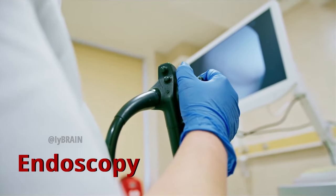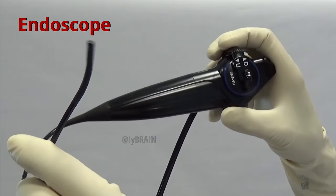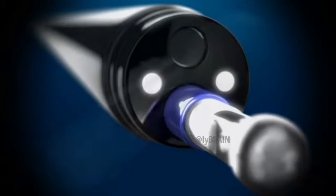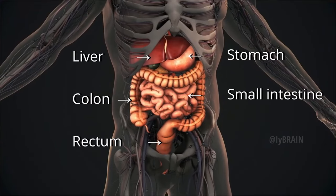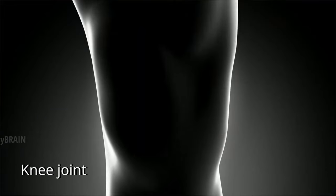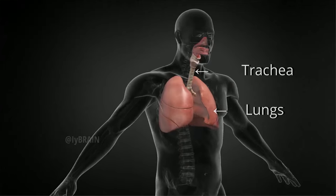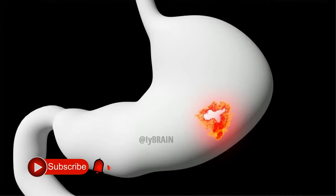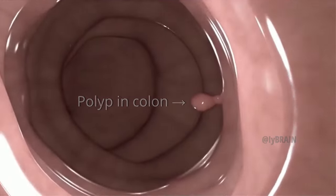Endoscopy is a medical procedure that involves the use of an endoscope, which is a thin, flexible tube with a light and camera attached to its tip. The purpose of an endoscopy is to visually examine the interior of various organs and structures within the body. It allows doctors to diagnose and treat a wide range of medical conditions without the need for invasive surgery.